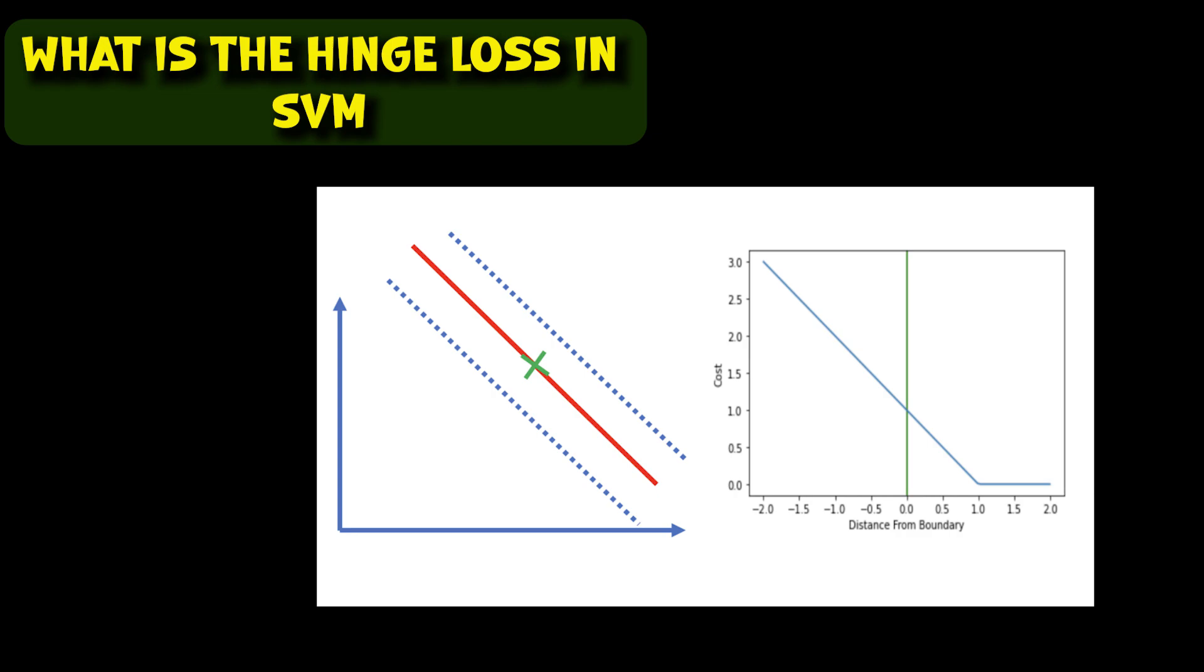Even if new observations are classified correctly, they can incur a penalty if the margin from the decision boundary is not large enough.